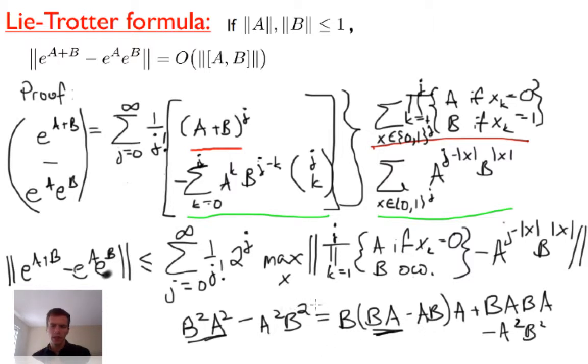This first term is bounded in norm by the commutator [A,B]. This expression is minus the commutator. Then we get another expression that has the same form, except we've moved one of the A's. So BBAA, we've switched this A with this B, so we get BABA.